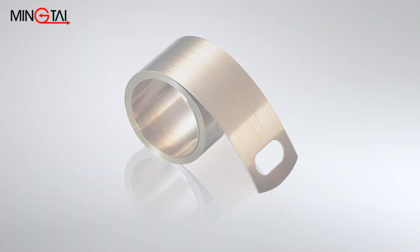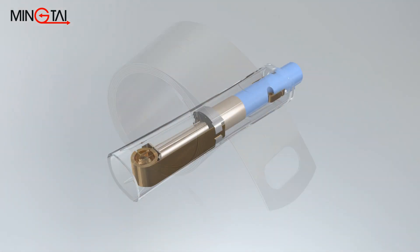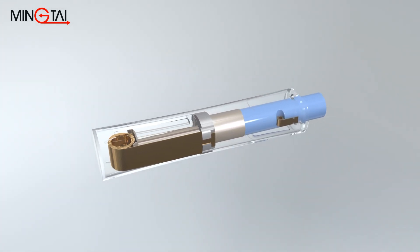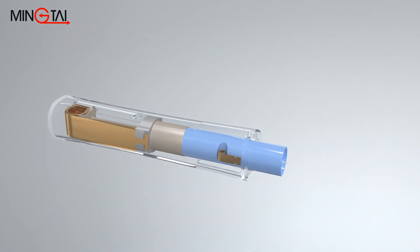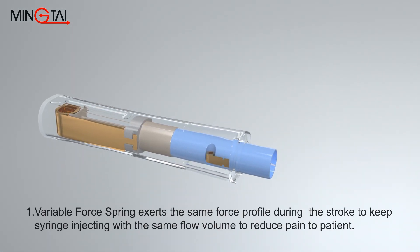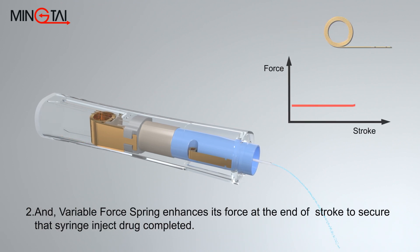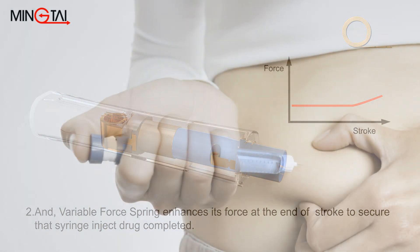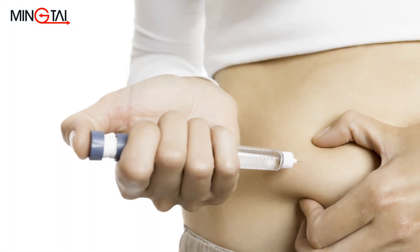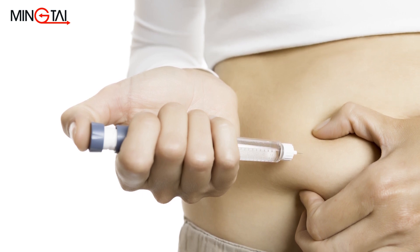Constant force springs can also be applied to precision pen-type drug injectors. They feature unprecedented repeatability for a system that can consistently and accurately produce extremely short plunger movements with a maximum displacement variation of plus or minus 0.026 millimeters, which is less than half the width of a human hair. A compact and easy-to-use precision pen injector utilizing a constant force spring is an excellent replacement for a traditional syringe where accuracy can be difficult to control.